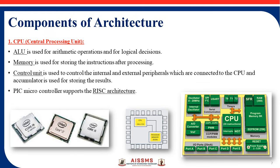The main component of architecture is the CPU — central processing unit. CPU has mainly three components: ALU (arithmetic and logical operations), memory (for storing and processing instructions), and control unit (which controls all peripheral devices attached to the CPU). PIC microcontroller supports reduced instruction set architecture, meaning every component can be embedded into a single chip — this is called a microcontroller.